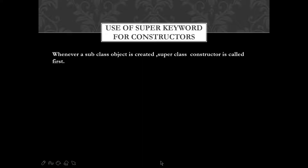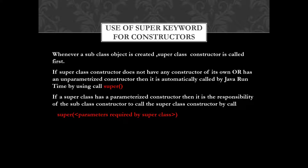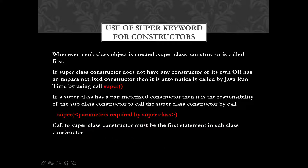Whenever a subclass wants to create an object, a super class constructor will be automatically called first. If it is a parameterless constructor, then the Java runtime will automatically call the super class unparameterized constructor whenever the subclass object is created. But if you have a parameterized constructor in the super class, then it is the responsibility of the user to write that statement explicitly. Also, calling the super class constructor should be the first statement in the subclass constructor.